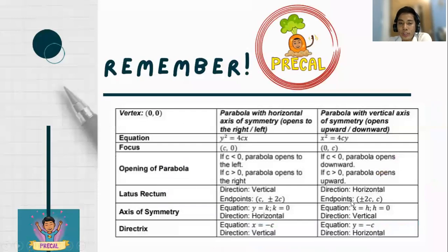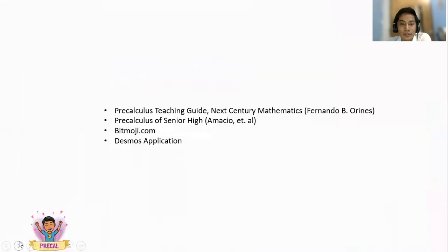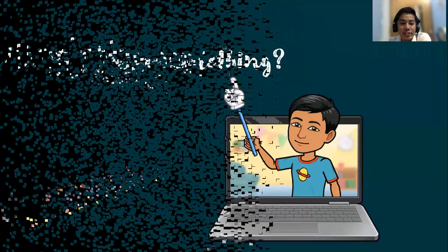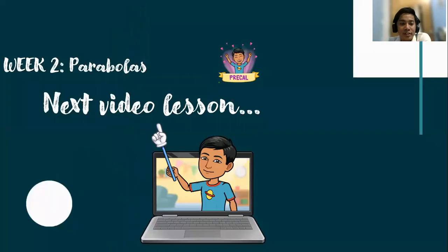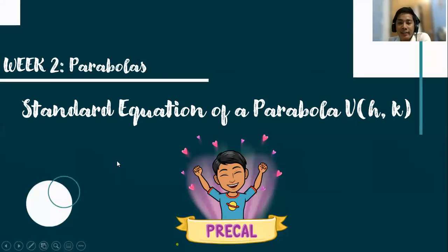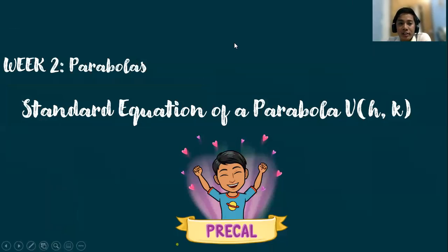As a summary, always look at this plate for you not to get confused. Here are the references used in this presentation. Did you learn something today? For our next part of the video lesson, we will talk about standard equation of a parabola vertex at (h,k). So this time, the vertex is now located anywhere on the Cartesian plane, not at the origin. It will be located in quadrant 1, quadrant 2, quadrant 3, or quadrant 4.